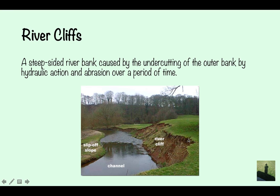River cliffs. River cliffs are steep-sided river banks caused by the undercutting of the bank by hydraulic action and abrasion over a period of time. So you've got the river cliff here — erosion has occurred and undercut it, and that's created a river cliff.